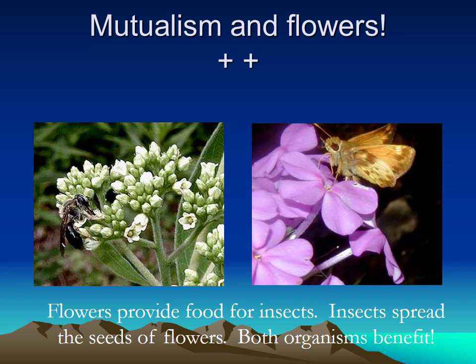Let's look at flowers and insects. The flower provides food for the insects to eat, which is good, and the insects help the flowers to reproduce. Both of them get something good out of it, so again — plus-plus, mutualism.